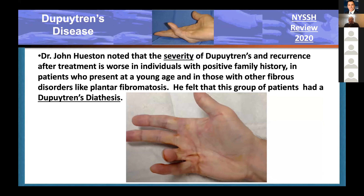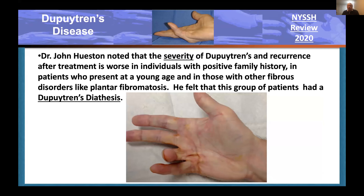John Huston noted the severity of Dupuytren's disease was worse in individuals with a family history, those who started at a young age, and those who had ectopic fibromatoses in other locations. He called this the Dupuytren's diathesis. This particular subset of the population is often tested on training exams.